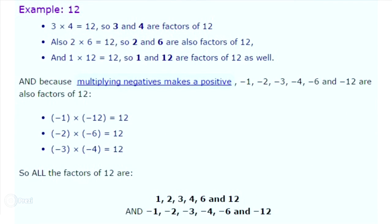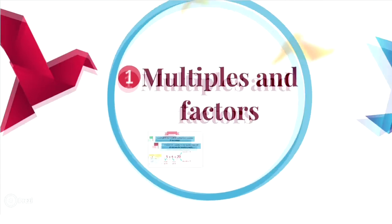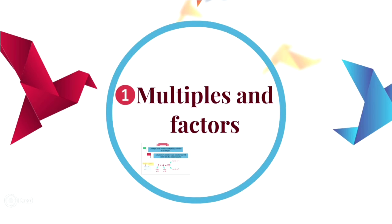In this exercise you must find the factors of 12. You can say that 1, 2, 3, 4, 6, and 12 are factors of 12. Because multiplying negatives makes a positive, the negative versions of these factors are also factors of 12. So all the factors of 12 are 1, 2, 3, 4, 6, 12 and minus 1, minus 2, minus 3, minus 4, minus 6, and minus 12. We end the first question about multiples and factors.